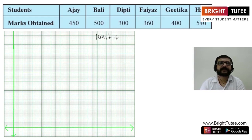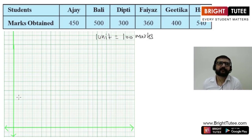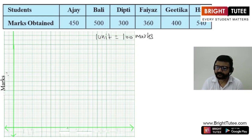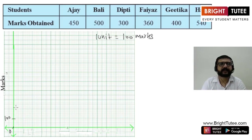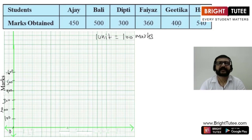Let's choose the scale as one unit equal to 100 marks. On the vertical line we will represent marks of students. Since the scale is 100, we mark the vertical axis as 0, 100, 200, 300, 400, 500, and 600. Since 540 is the highest mark, up to 600 on the axis is sufficient.